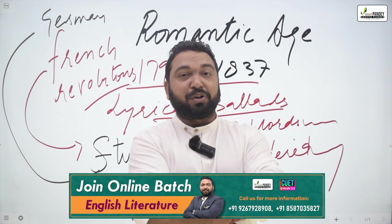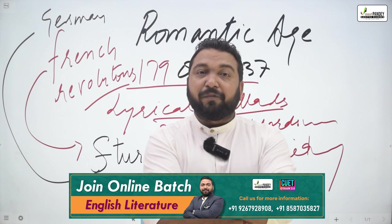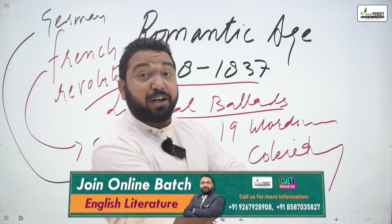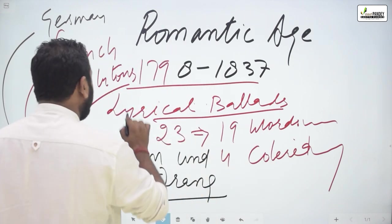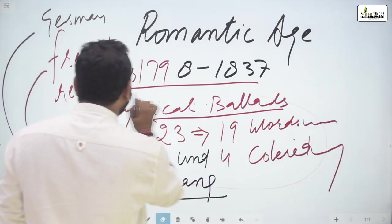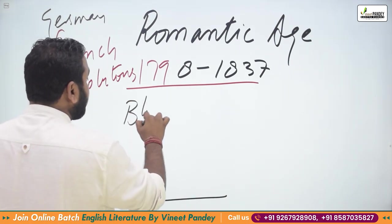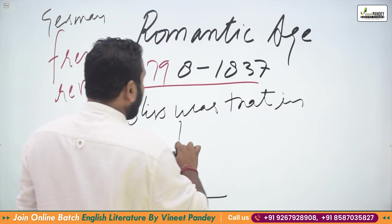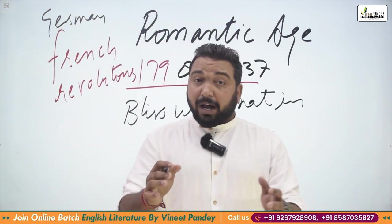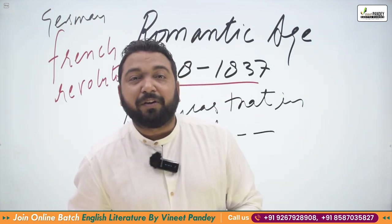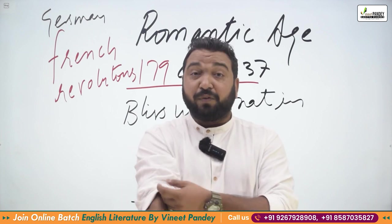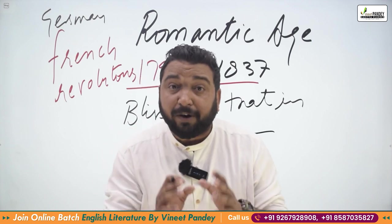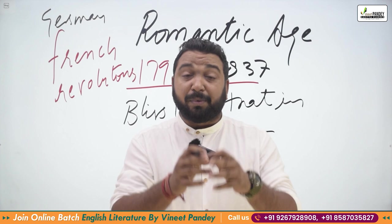Wordsworth knew about both Sturm und Drang and the French Revolution. He was very happy with the French Revolution and wrote: 'Bliss was it in that dawn to be alive, to be young was very heaven.' In The Prelude, 90 percent of NET aspirants don't read these details — but for JRF, you must know them.